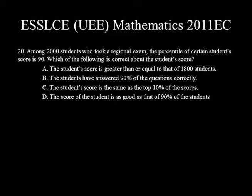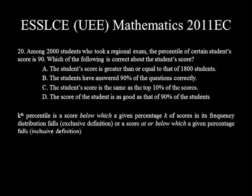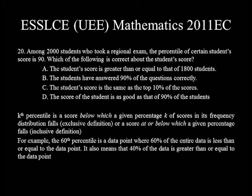Question number 20. Among 2000 students who took an exam, the percentile of a certain student's score is 90. A percentile is a score at or below which a given percentage of scores in a distribution falls. For example, the 60th percentile is a data point where 60% of the data is less than or equal to that point, meaning 40% is greater. Thus choice C is the correct answer.